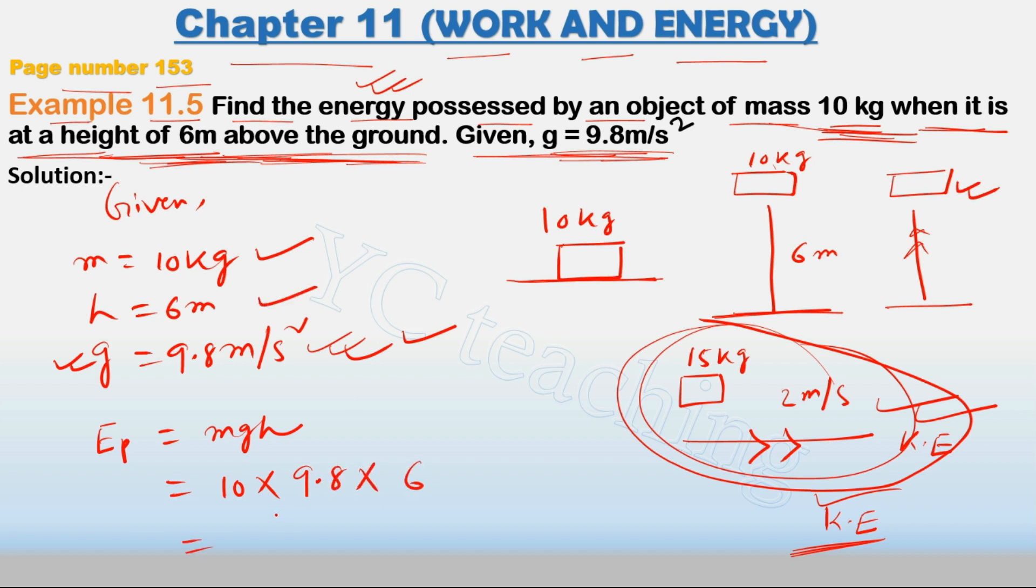Now we have to simplify this. So it's 10 into 9.8 into 6. Since 9.8 has a decimal point, we divide by 10, so this becomes 98 into 6, which equals 588. And SI unit is joule.